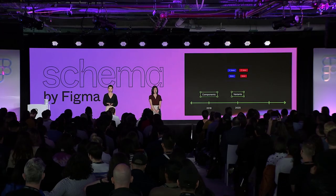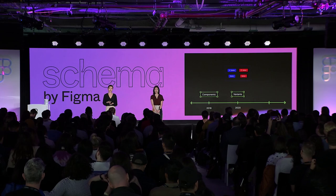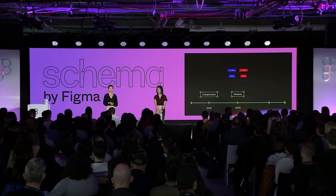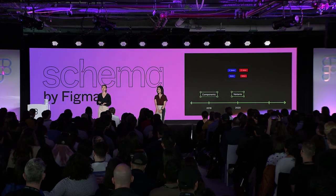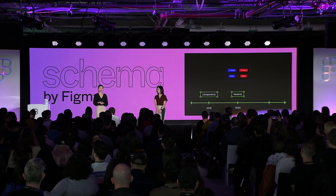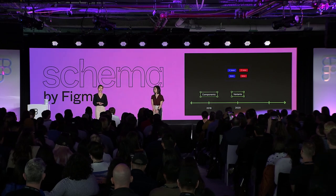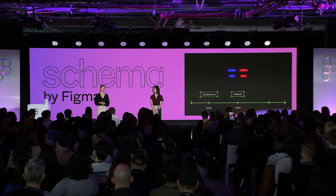We've come a long way since 2016, but of course there's still a lot we can do to make using Figma easier. One issue with variants is that designers still have to draw out every single permutation of what they want a component to look like, which is really time-consuming.